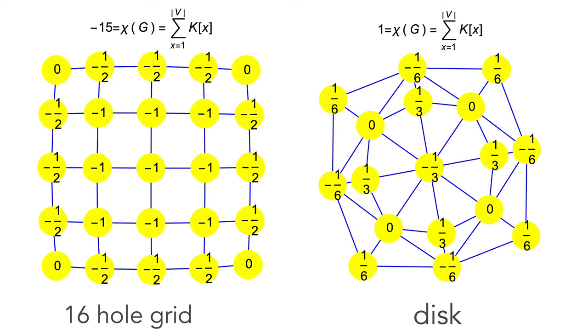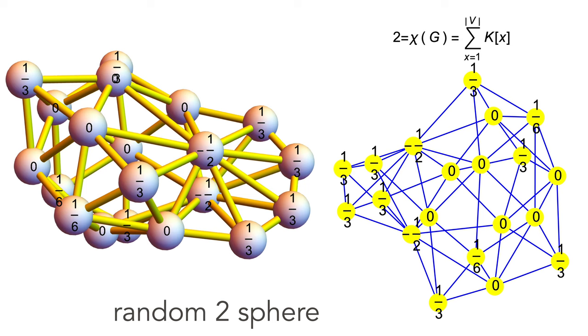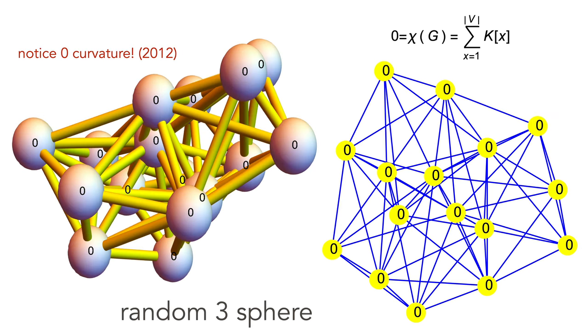Actually, to the right is a disk; to the left is not a disk because there are lots of holes. There are no triangles; this is actually a one-dimensional graph here, so the Euler characteristic is minus 15. Then we have a random 2-sphere; the Euler characteristic is 2, and the curvatures add up to 2. An example of a three-dimensional manifold, a three-dimensional sphere. It's interesting that the curvature is constant zero there. I noticed that for all even-dimensional manifolds, the curvature is always zero everywhere, constant zero. I'll prove that later. The Euler characteristic of an even-dimensional sphere is 2, like for this random 4-sphere.